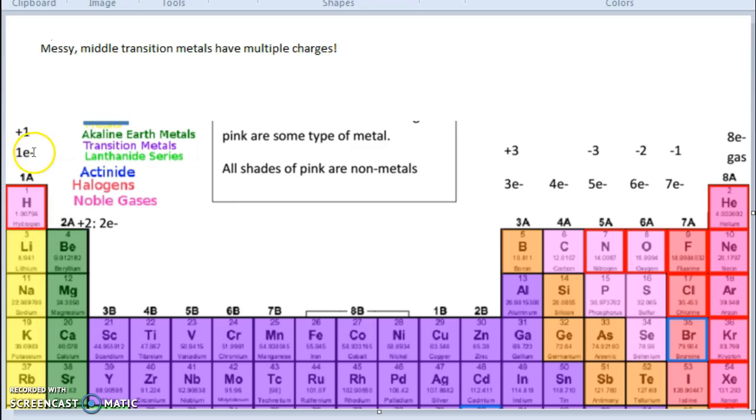Now the other weird thing about the messy middle transition metals is they have multiple charges. Group 1, the charge after they lose one electron is always plus one. Group 2 loses two electrons, the charge is plus two. Group 3 loses three electrons, the charge is plus three. Group 4 shares. Group 5, when it gains electrons, the charge is negative three, and so on, negative two, negative one, and they don't react, so zero charge.